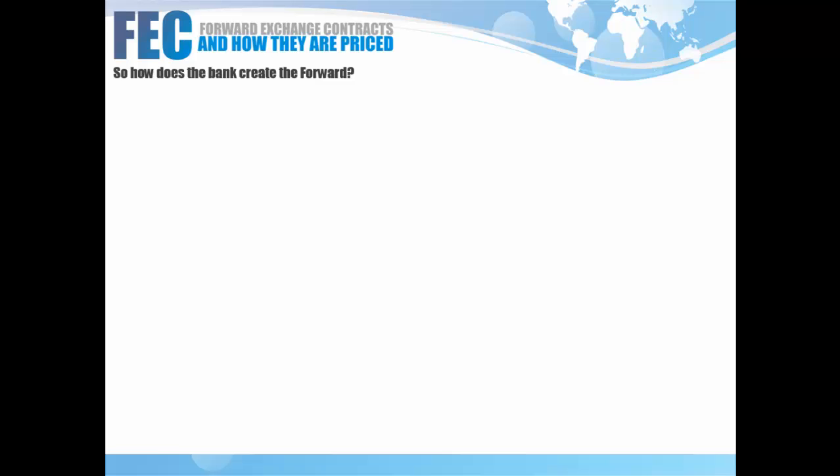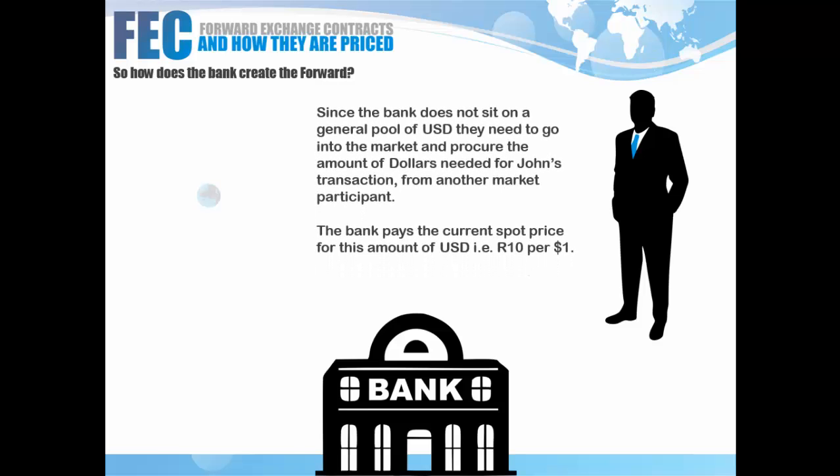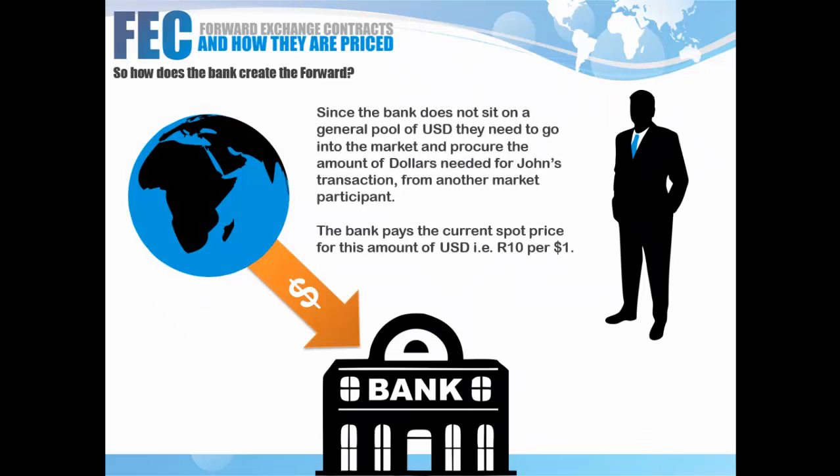A bank doesn't sit on spare cash. The function of a bank is to facilitate trade, so they won't necessarily sit on your trades and risk for the sake of it. If possible, they would like to have a trade done where they've mitigated all the risk. Banks do take risk, but that's their own risk — not as a result of your ticket. So in this instance, because the bank does not sit on a pool of dollars, it physically has to go into the market and buy dollars on behalf of John, because they know they need to give those dollars to John. With the current spot rate being 10 rand per dollar, the bank would have to pay 10 million rand.